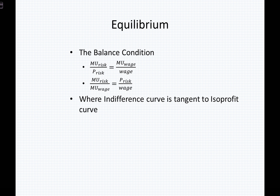We know that we have a balance condition in microeconomics — we've seen this numerous times — where our balance condition is really simply where the marginal utility of risk divided by the price of risk is equal to the marginal utility of wage divided by the price of wage. A worker and an employer really have elements of each of these two terms: MU of risk over price of risk versus MU of wage over price of wage. And we know that in both cases, in competitive markets, firms and workers are wage takers.